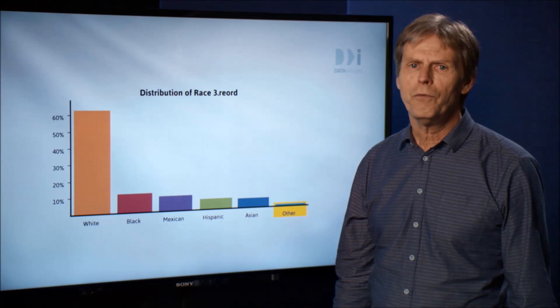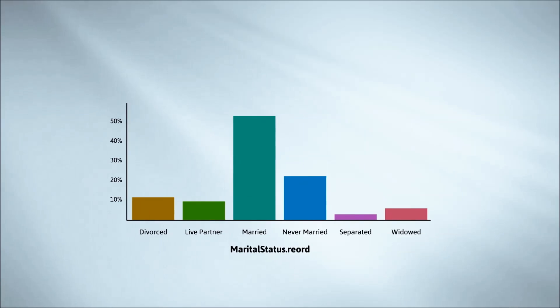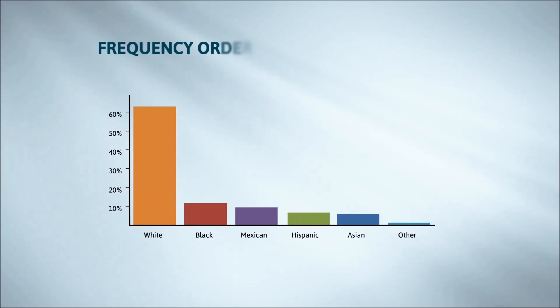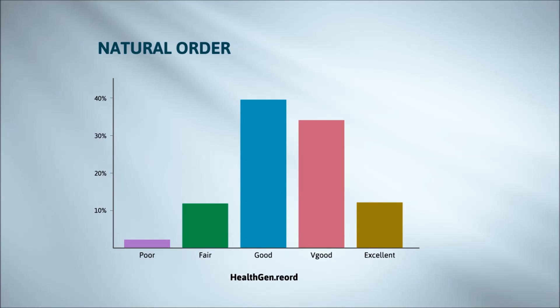To wrap up, we have the following ways of ordering. Alphabetic order helps us to locate a particular item in a list, just as we do with a name in a phone book. Frequency order is best for letting us see relative popularity. But if there's a natural order, we'd normally want to use it.